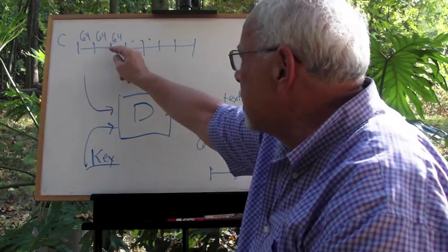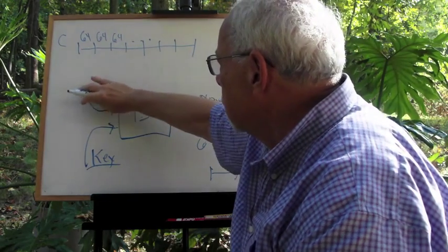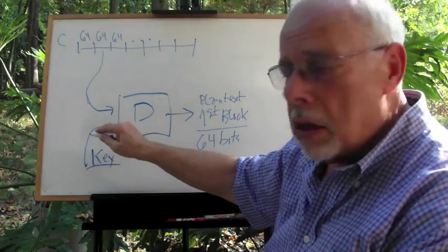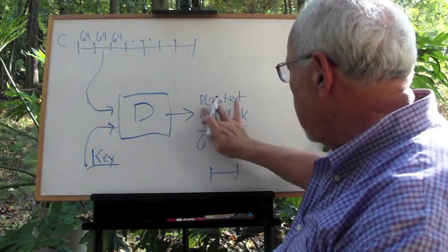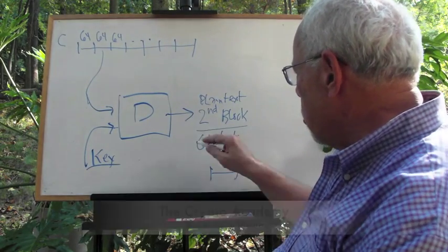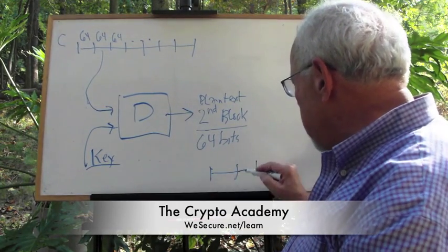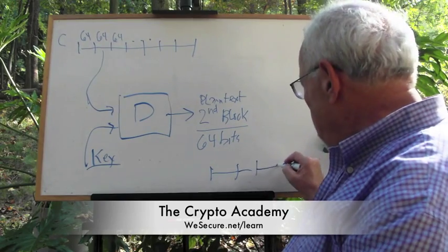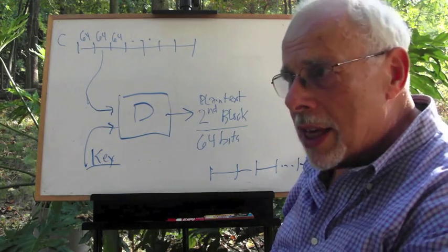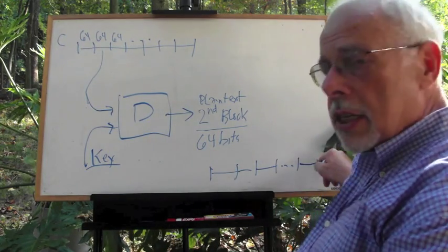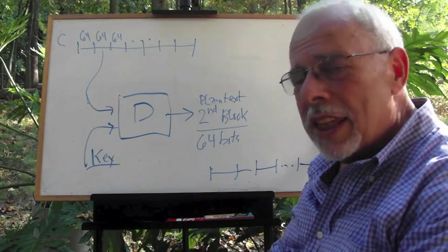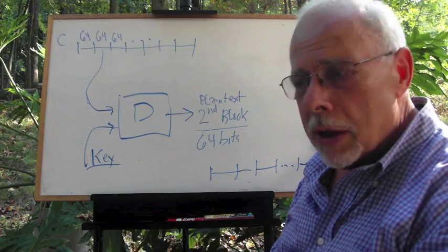Then they go to the second cipher block and feed this to the same box with the same key. What they get here is the second plaintext block, also 64 bits, and they put it here. And on they go—the third, the fourth—until they finish the entire ciphertext. When done, what they see here is the original plaintext, the original secret decrypted. The case is done.